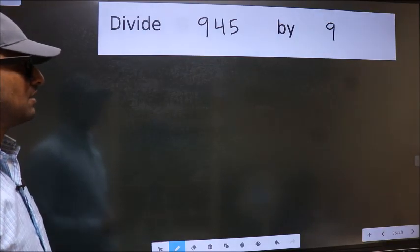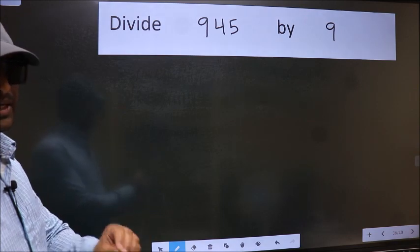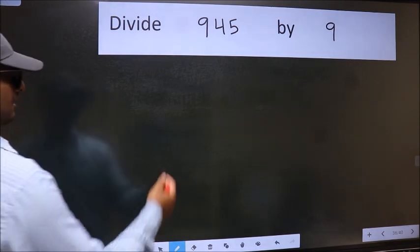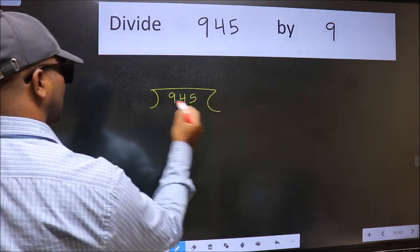Divide 945 by 9. To do this division, we should frame it in this way: 945 here and 9 here.